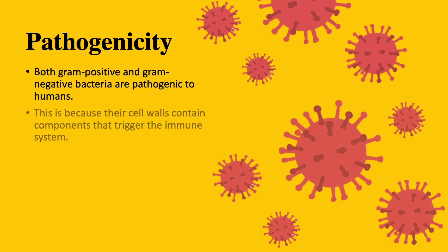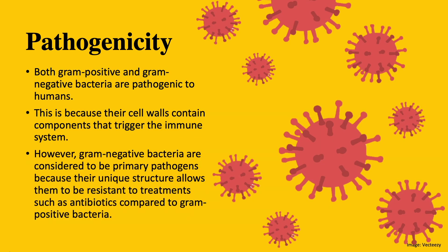Both gram-positive and gram-negative bacteria are pathogenic, because their cell walls contain toxic components that can cause disease. They play a central role in the pathogenesis of bacterial septic shock in humans, a lethal condition that involves the collapse of the circulatory system and causes multiple organ failures. However, gram-negative bacteria are considered to be the primary pathogens because their unique structure allows them to be resistant to treatments such as antibiotics, compared to gram-positive bacteria.